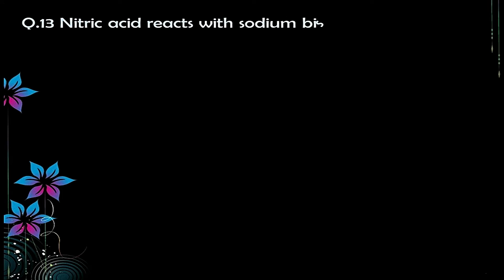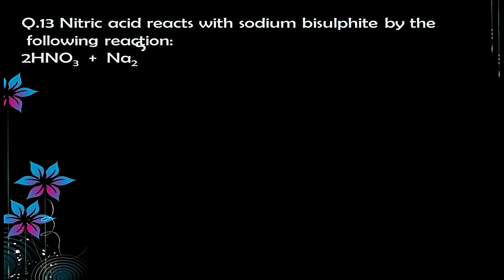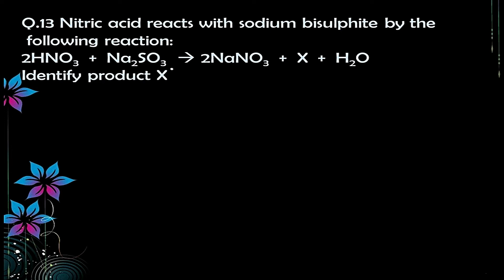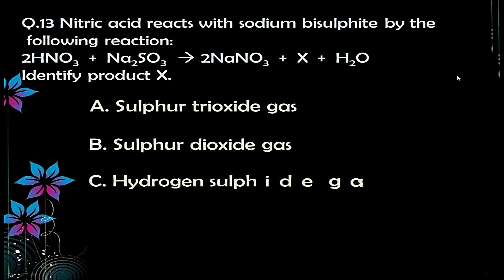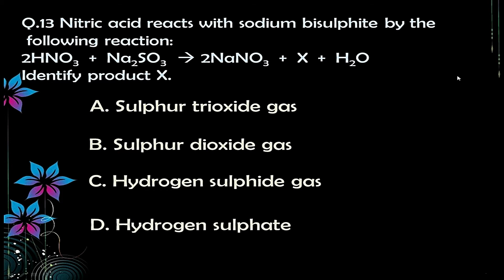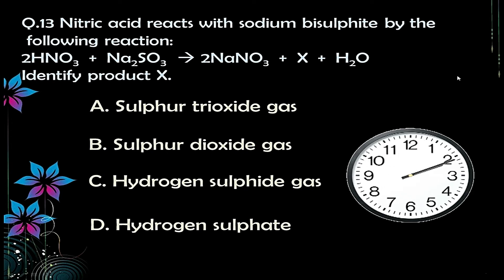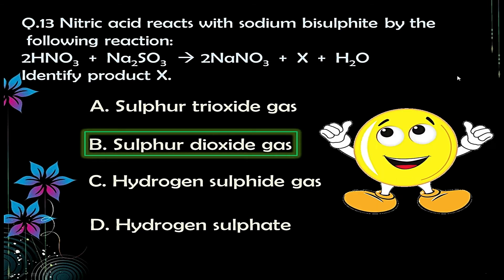Question number thirteen: nitric acid reacts with sodium sulphite by the reaction: 2HNO₃ + Na₂SO₃ → 2NaNO₃ + X + H₂O. Identify product X. Options: A) sulfur trioxide gas, B) sulfur dioxide gas, C) hydrogen sulfide gas, D) hydrogen sulfate. The correct answer is option B — sulfur dioxide gas.